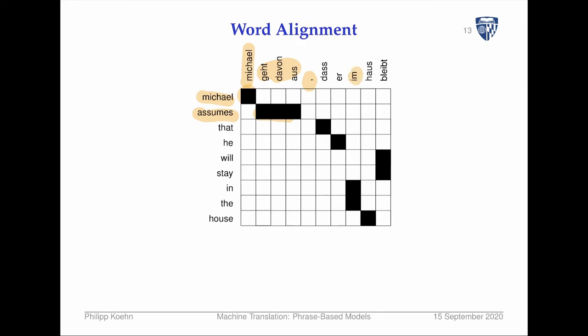And 'im' becomes 'in there.' So you have phrases that are longer either in English or in German — here a German word mapping to two English words, or an English word mapping to three German words. That's all fine. That's the word alignment.